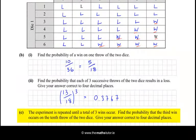The experiment is repeated until a total of 3 wins occurs. Find the probability that the 3rd win occurs on the 10th throw of the dice. Give your answer correct to 4 decimal places. Well if the 3rd win occurs on the 10th throw that means there could only have been 2 wins from the first 9 throws.